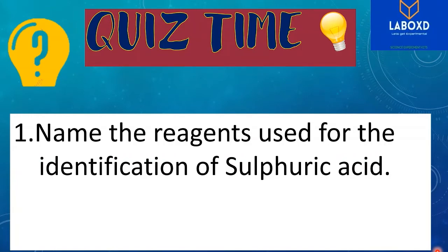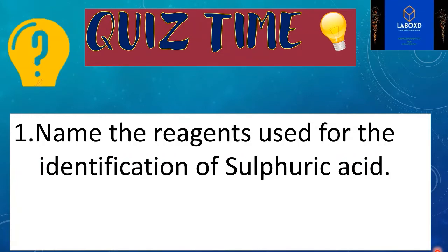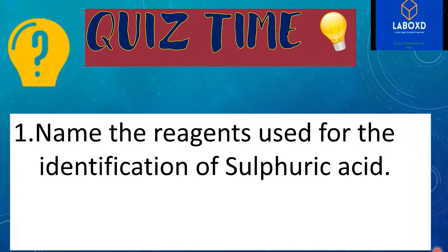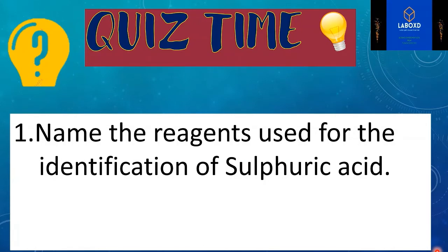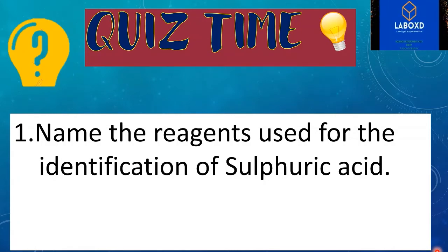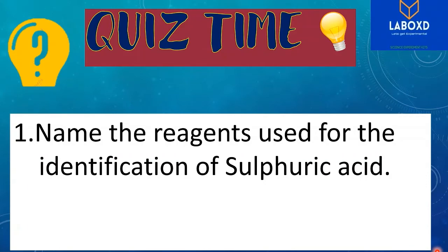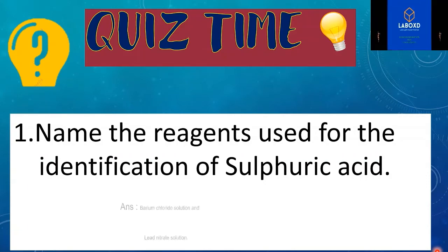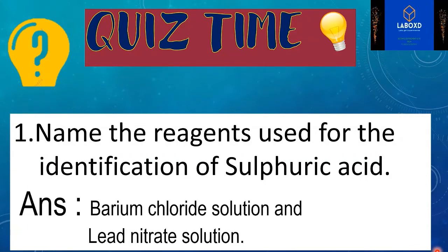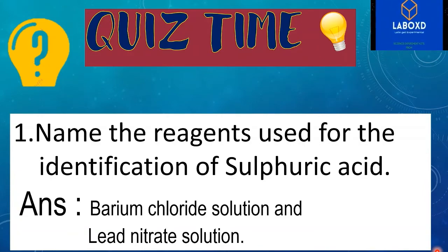Now I am here with the quiz time. I hope you are all ready to answer. Name the reagents used for the identification of sulfuric acid. Did you guess the answer? Yes, it is barium chloride solution and lead nitrate solution.